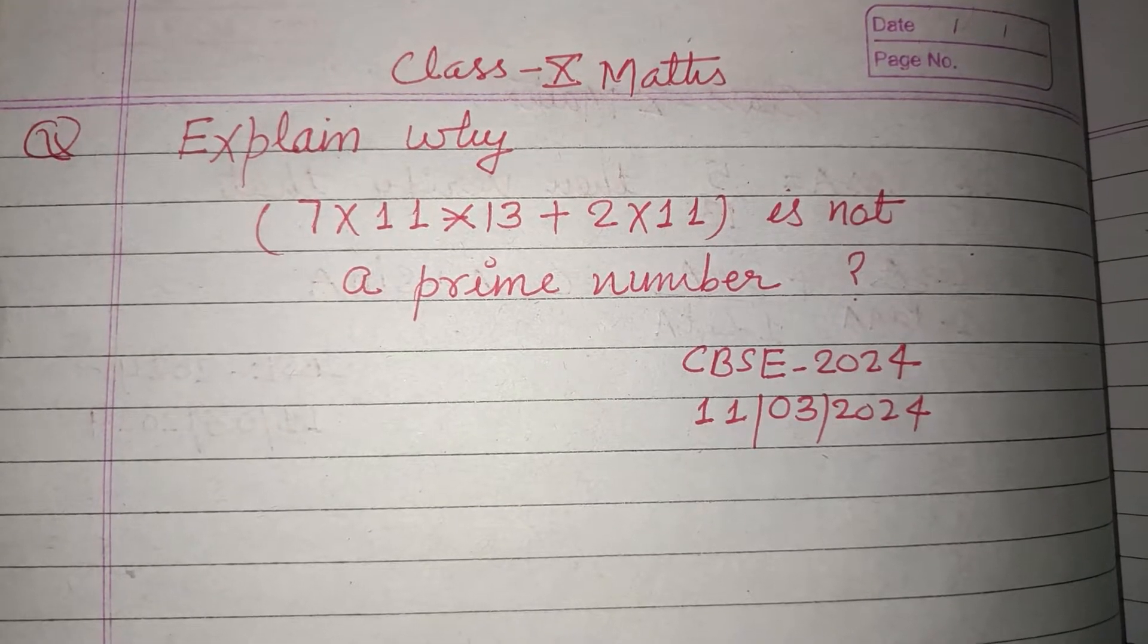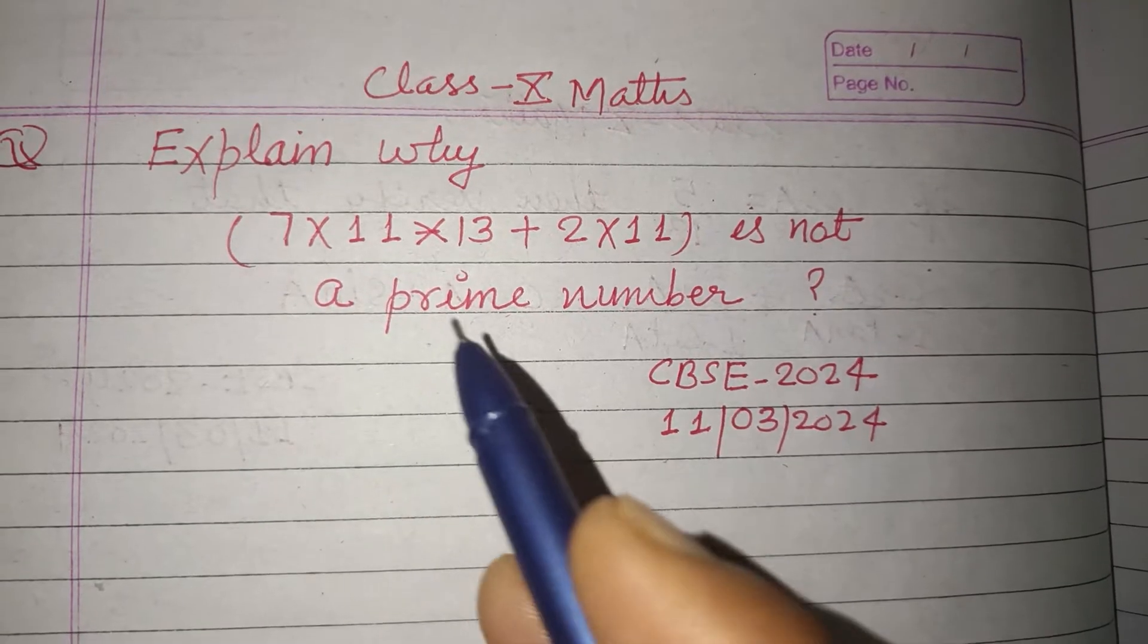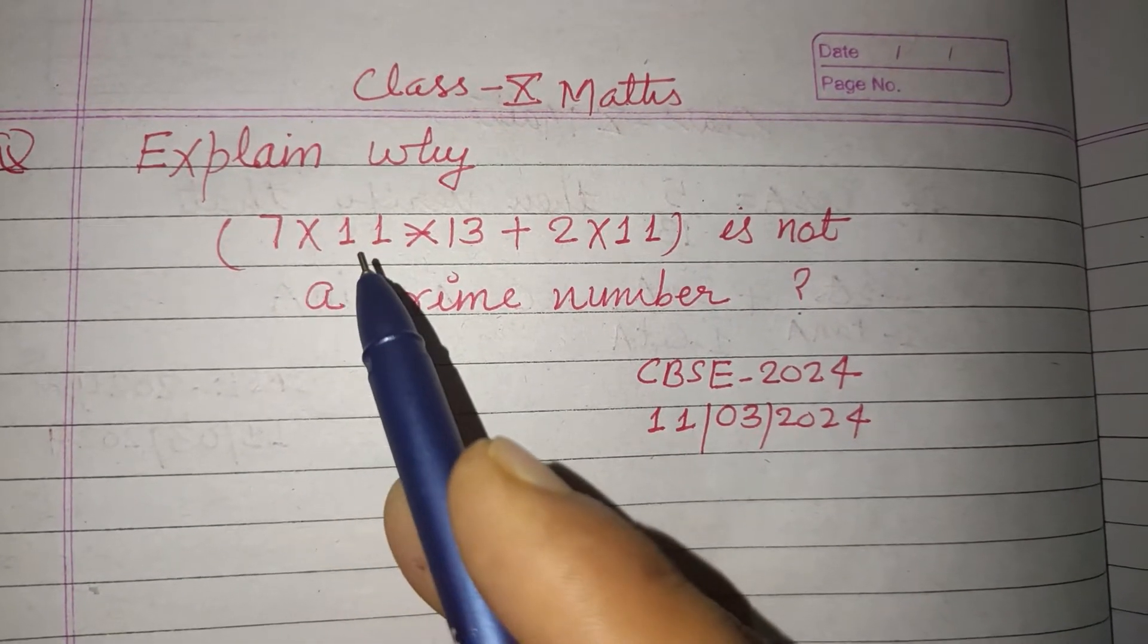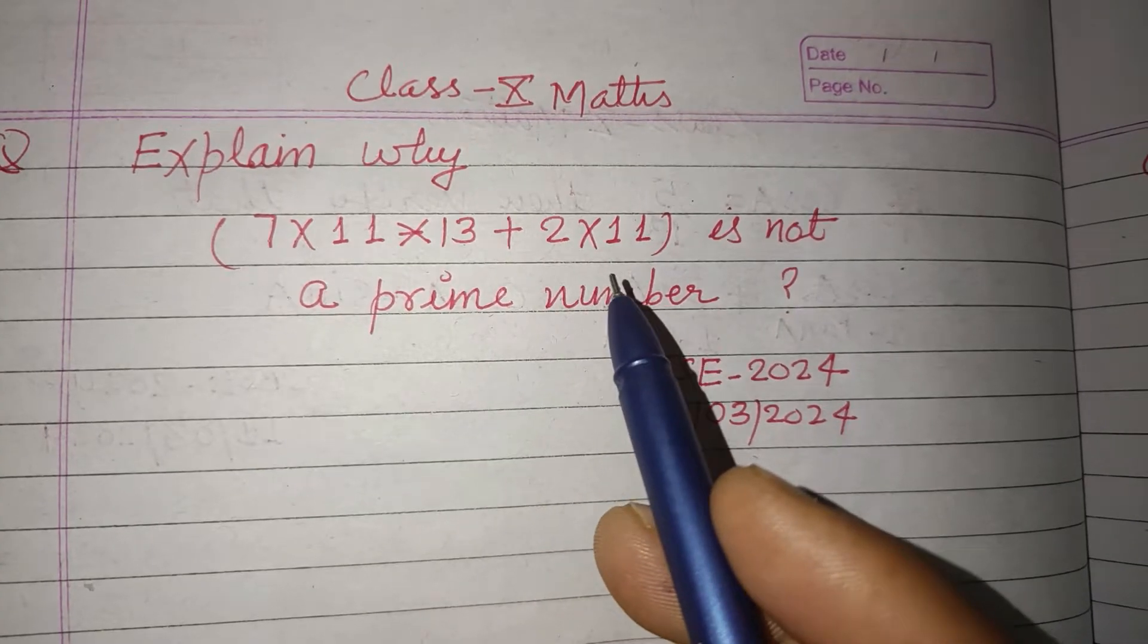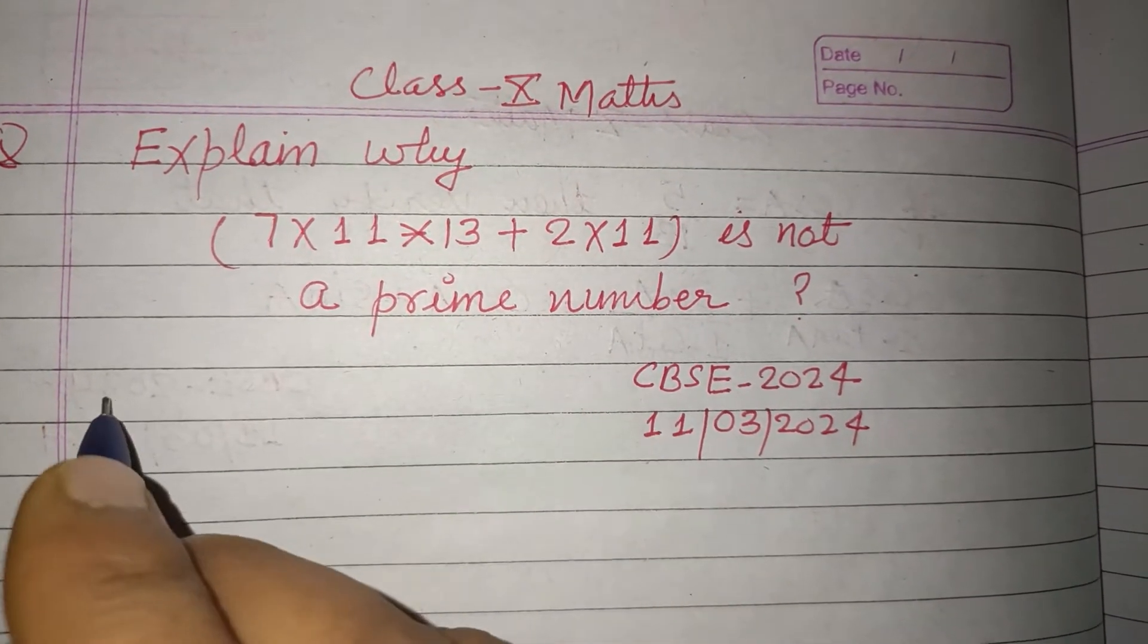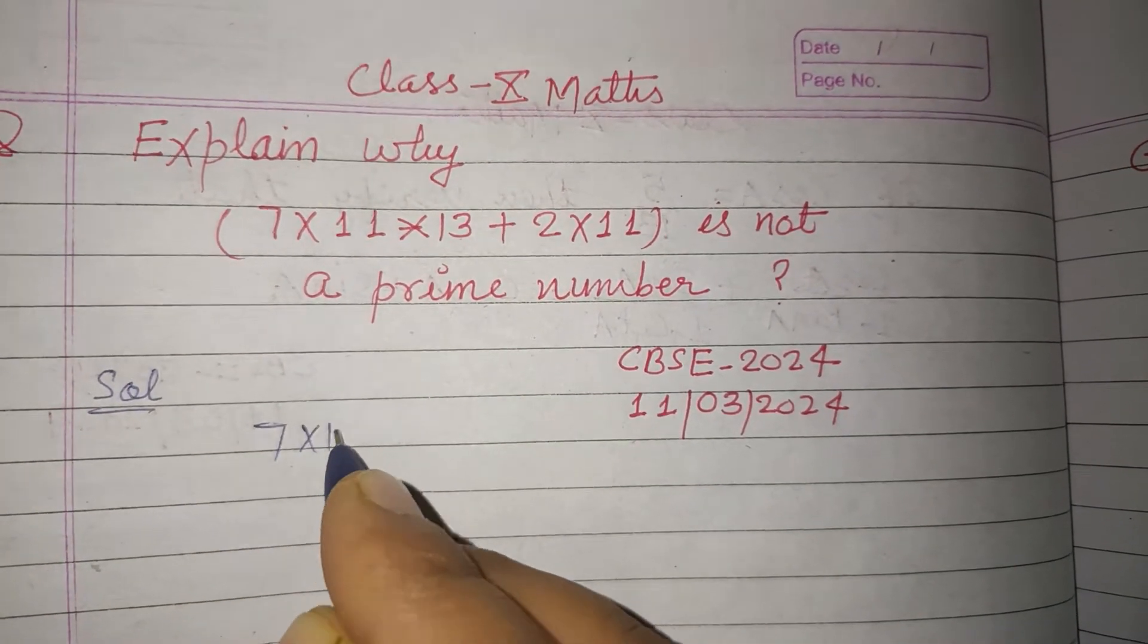Hello viewers, warm welcome to this YouTube channel. This is a question from CBSE board exam 2024. Explain why 7×11×13 + 2×11 is not a prime number. Here the given number is 7×11×13 + 2×11.